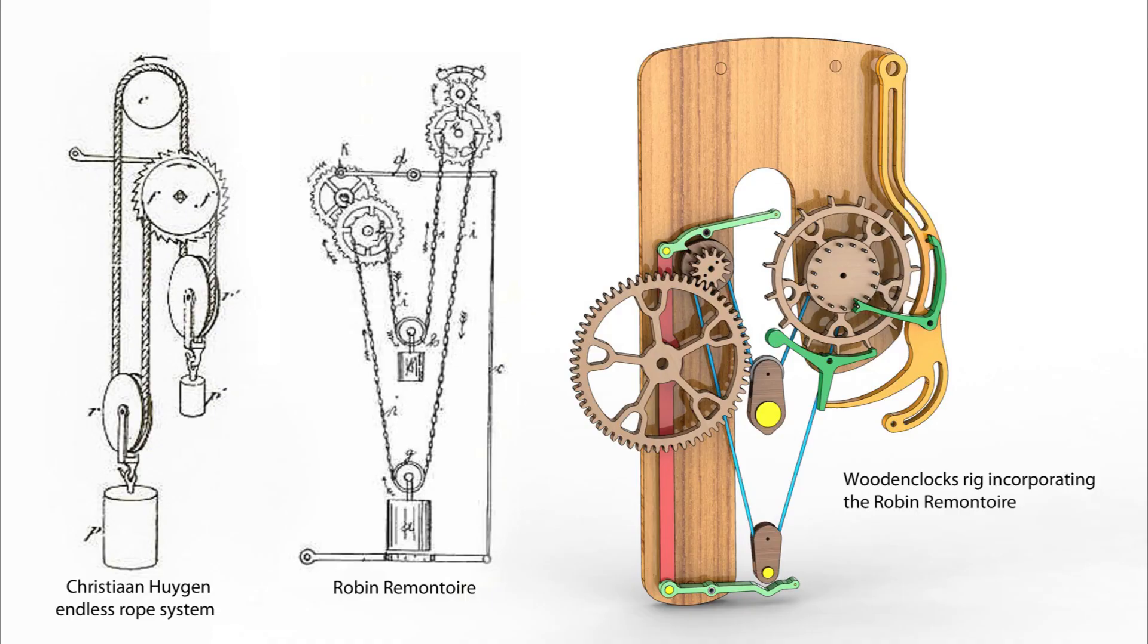A normal clock has a weight that drives an escapement directly through the gear train. In a remontoir design, the escapement is driven by a separate weight which is in turn driven by the main gear train.